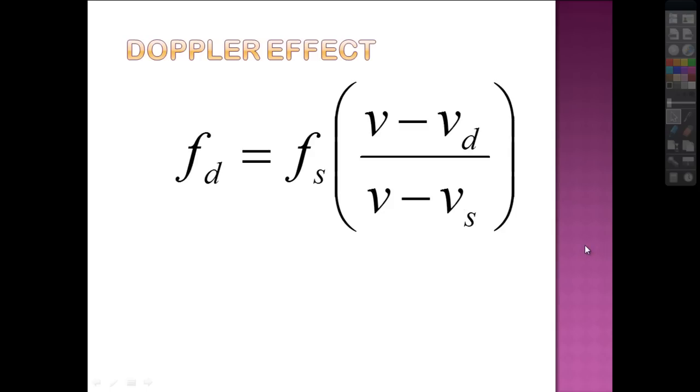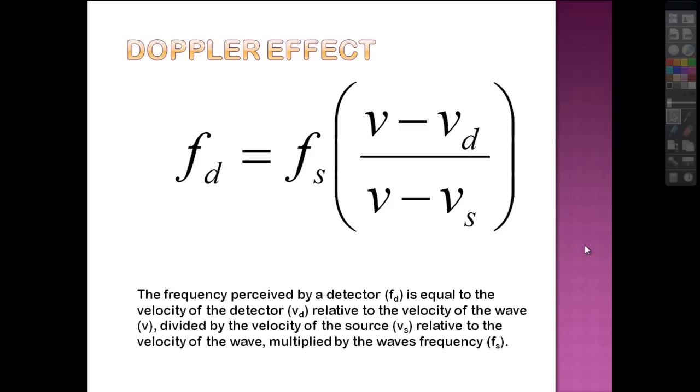So, best way to explain this is with a problem. But here's a little, this just explains exactly what I just said. Frequency perceived by a detector is equal to the velocity of the detector relative to the velocity of the wave. Divided by the velocity of the source relative to the velocity of the wave. Multiplied by the wave's frequency. So we're finding the relative velocity here for both of these. This is the sound regular speed. So this V and this V are going to be equal. And finding it relative to the detector and relative to the source.